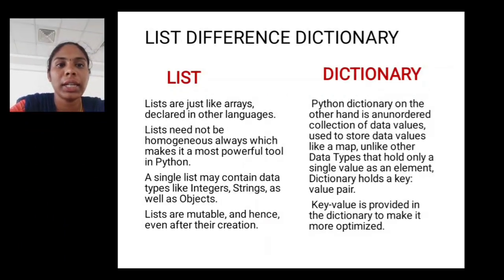Differentiate list and dictionary. Lists are just like arrays declared in other languages. Python dictionary on the other hand is an unordered collection of data values. Lists need not be homogeneous always which makes it the most powerful tool in Python. Used to store data values like a map, unlike other data types that hold only a single value as an element, dictionary holds key-value pairs. A single list may contain data types like integer, string as well as objects. Lists are mutable and hence even after their creation, key-value is provided in the dictionary to make it more optimized.